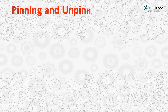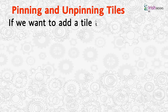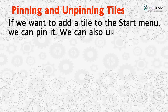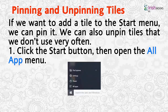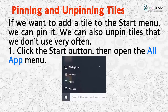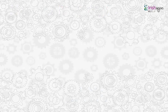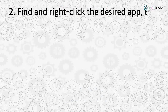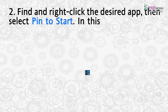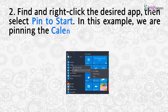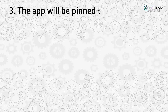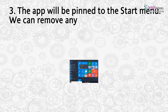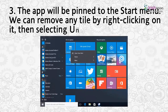Pinning and Unpinning Tiles: If we want to add a tile to the Start menu, we can pin it. We can also unpin tiles that we don't use very often. Click the Start button, then open the All Apps menu. Find and right-click the desired app, then select Pin to Start. For example, we can pin the Calendar app. To remove any tile, right-click on it and select Unpin from Start.